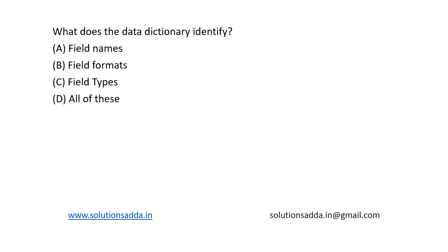Typically, a data dictionary contains the names and descriptions of various tables and their contents, like field names, field formats, field types, etc. Based on the options: option A, field names — correct; option B, field format — correct; option C, field type — correct. So all of these are correct, making option D, all of the above, the correct answer.